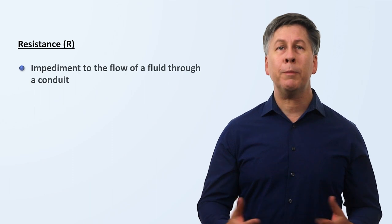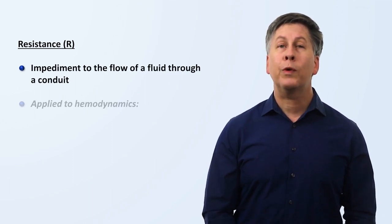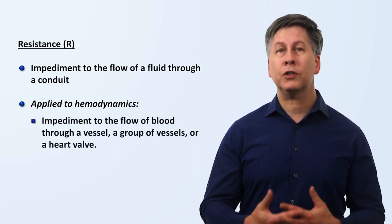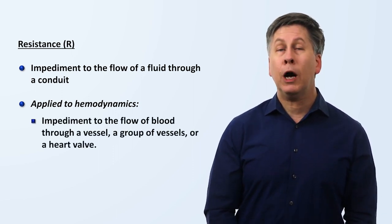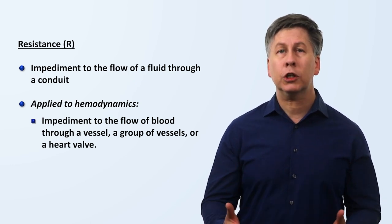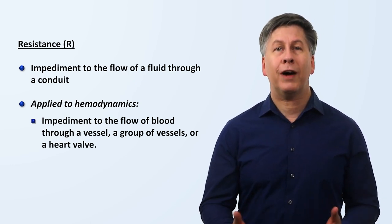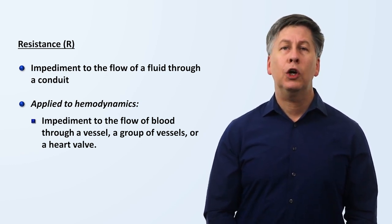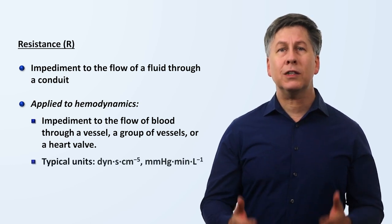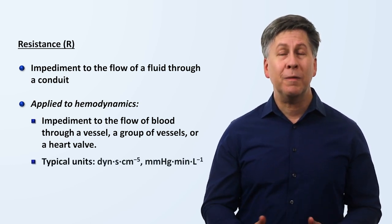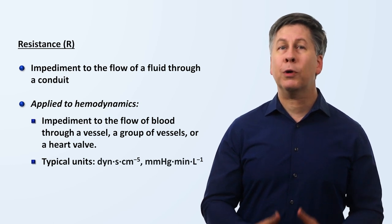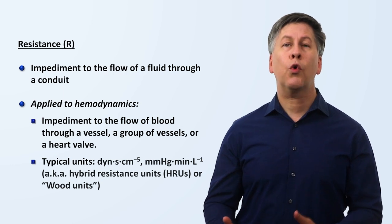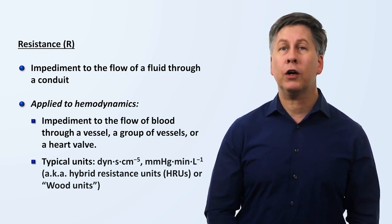Resistance is impediment to the flow of a fluid through a conduit. When applied to hemodynamics, this is obviously referring to blood flow through a single vessel, a group of vessels, up to and including the entire systemic vasculature, or flow through a heart valve. Typical units for resistance are relatively less familiar to clinicians. Resistance is given in either dyne seconds per centimeter to the fifth or units of millimeters of mercury minutes per liter, the latter of which is also known as either hybrid resistance units or wood units, named after the cardiologist Paul Wood.